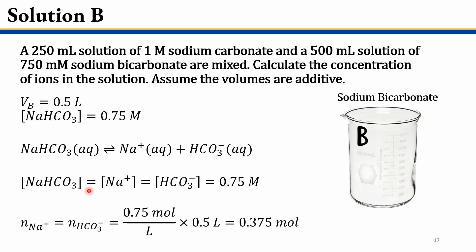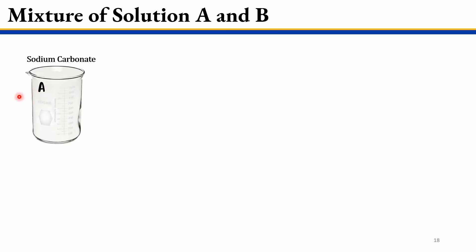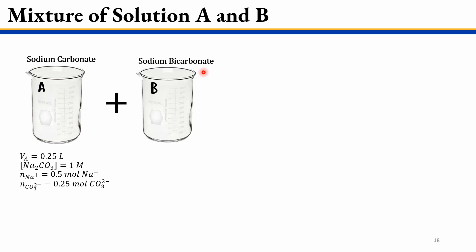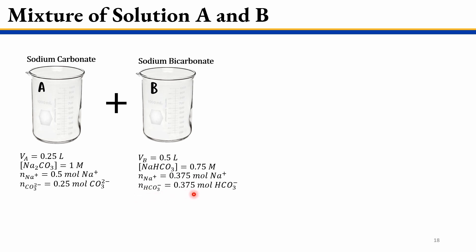Calculating the moles of each species in solution B: since moles of Na+ equal moles of HCO3 minus, we multiply 0.75 moles per liter by 0.5 liters, giving 0.375 moles for each. To summarize: solution A has volume 0.25 liters, with 0.5 moles of Na+ and 0.25 moles of CO3 2-. Solution B has volume 0.5 liters, concentration 0.75 molar, with 0.375 moles of Na+ and 0.375 moles of HCO3 minus.